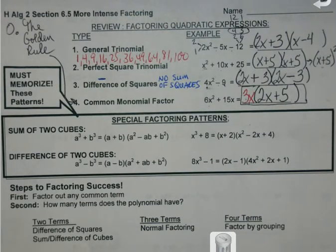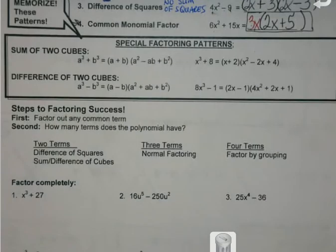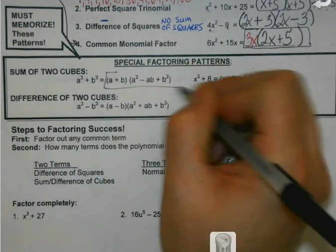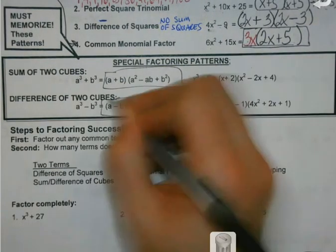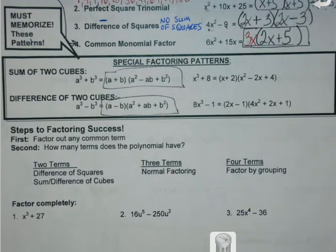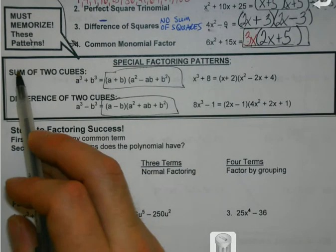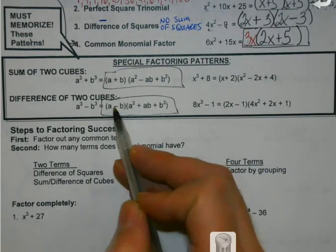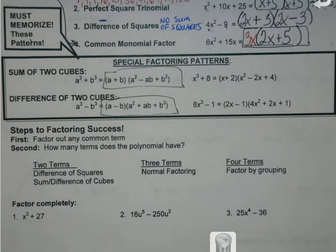Now we're going to start adding a couple of things. With sum and difference of cubes, you must memorize these formulas. Must, must, must. Because if you don't know the pattern, there's not another way around it. Notice with cubes there's both a sum and a difference — I can do both. The only difference is going to be the signs in the middle. I'll really break it down in the first couple, and then we'll start whipping through them a little faster.